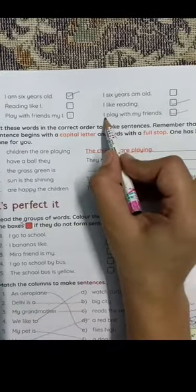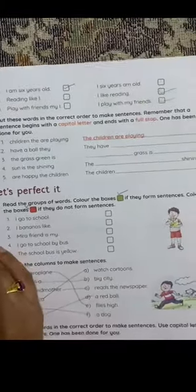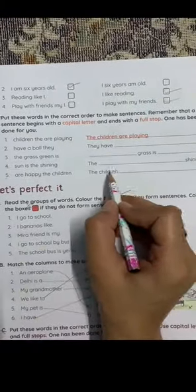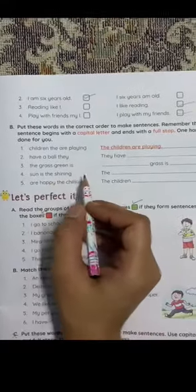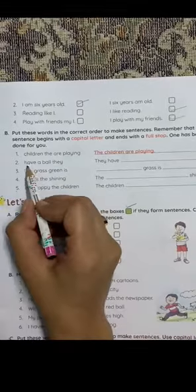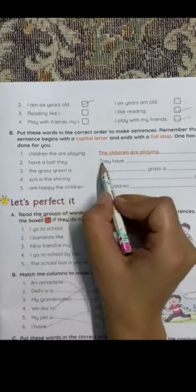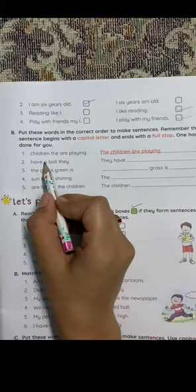Now we have to complete these lines by using first letter capital and last full stop. Have a ball they. They have what? A ball. A ball, full stop.